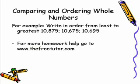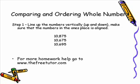Now we can use this exact same method for ordering whole numbers. Say for example we want to write in order from least to greatest: 10,875, 10,675, and 10,995. The steps are exactly the same as for comparing whole numbers using place value. Step number one is to line the numbers up vertically and make sure the ones digits are aligned correctly, as you can see in this picture.